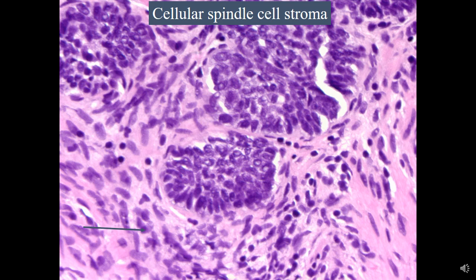When a lesion shows a reactive type of cellular spindly stroma proliferation, as in this example, it usually points towards a proliferative or benign lesion. This is typically the stroma you encounter in nodules of benign prostatic hyperplasia. Three histological variations — basal cell hyperplasia, adenosis, and sclerosing adenosis — classically present with this type of cellular spindly stroma. Also importantly, this is not stromogenic prostate cancer or desmoplastic stroma. Stromogenic prostate cancer has a typically very edematous, whitish, and inflammatory stromal appearance, which you should not confuse with this cellular spindly stroma.